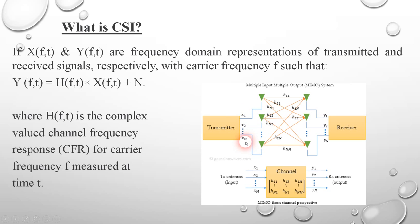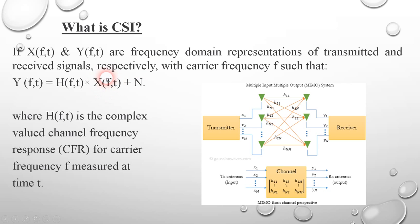Now we can define channel state information. If we assume the transmitted signal is x1, x2, x3 ... xn, and the received signal consists of the sent signal convolved or mixed with some channel state information plus some noise, then h(f,t) is the complex-valued channel frequency response, CFR, for the carrier frequency f measured at time t.